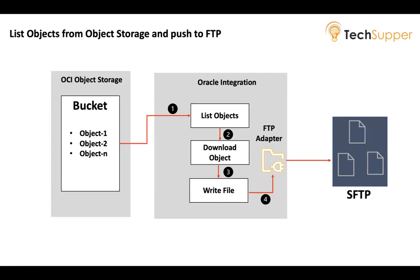As a use case, I'll show you a scenario where we have an OCI object storage bucket containing various objects — object one, object two, and so on — and we want to push all those objects to SFTP. I'll create a scheduled Oracle Integration that uses the native object storage action to list objects from the bucket, loop over each object, download them one by one using the OCI object storage action, and then use the FTP adapter to write each file to SFTP. We won't read the file content — just push the file as-is — but you can also read the content if needed.